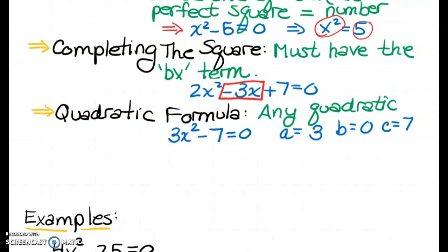Completing the square — you can use it whenever you have the bx term, meaning you have to have x to the first power in your equation. So if you're given an equation like 2x² − 3x + 7, we have that minus 3x term, so we can use the method of completing the square.